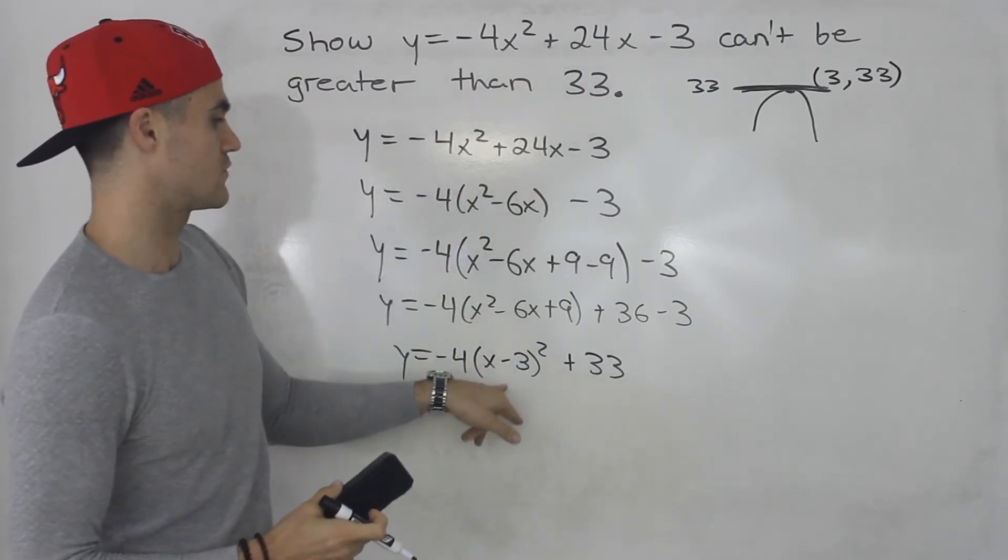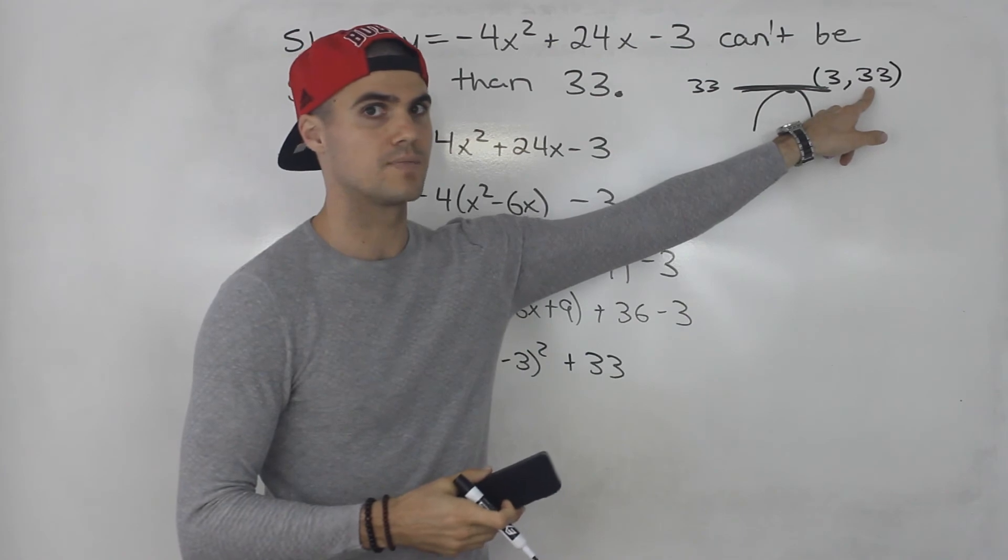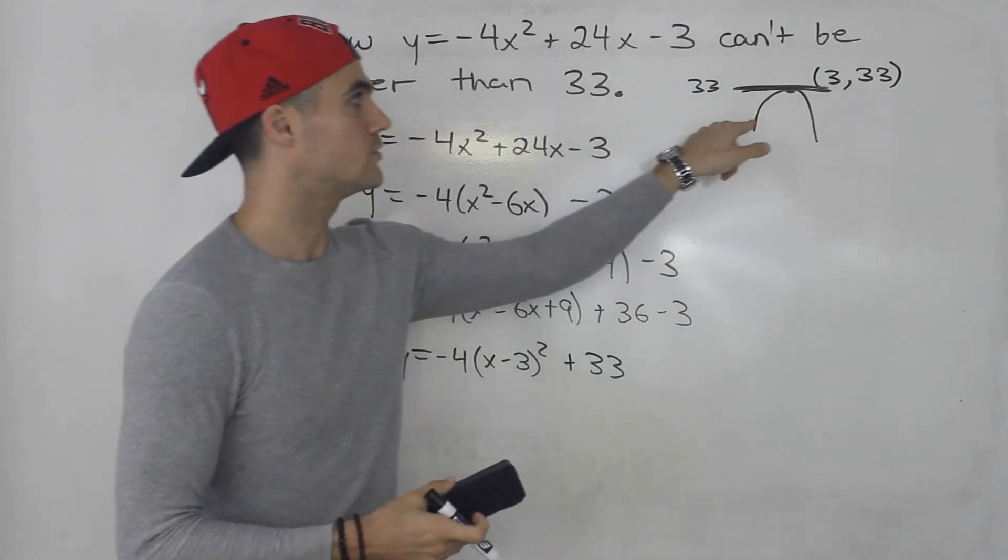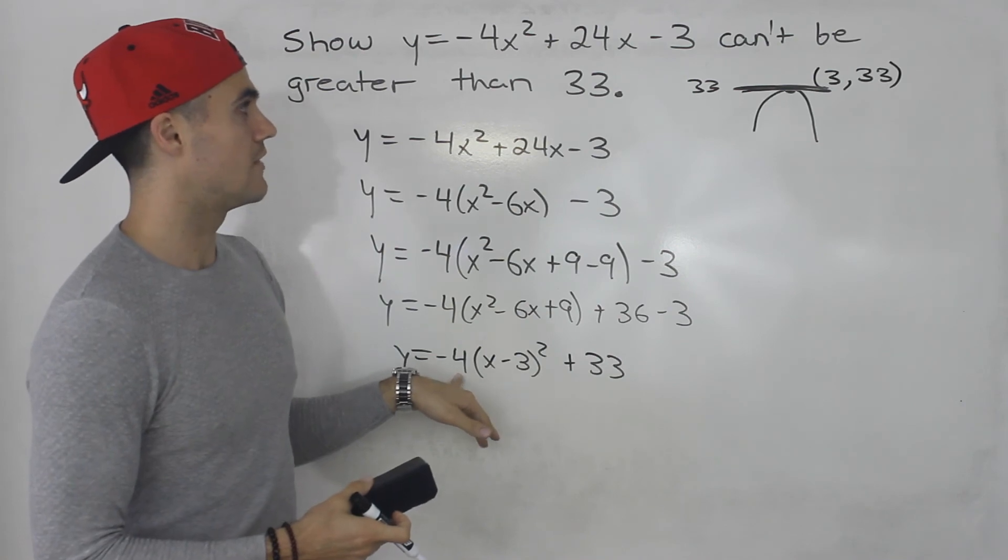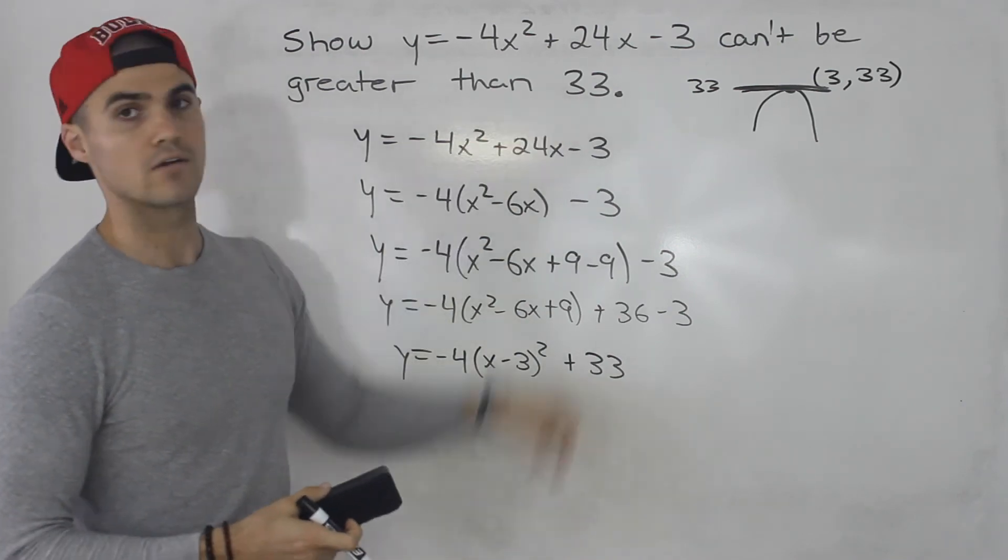We took this, put it into vertex form, showed the vertex was (3, 33). And then that y-value, because the parabola is opening down, means there are no y-values that could be greater than 33.